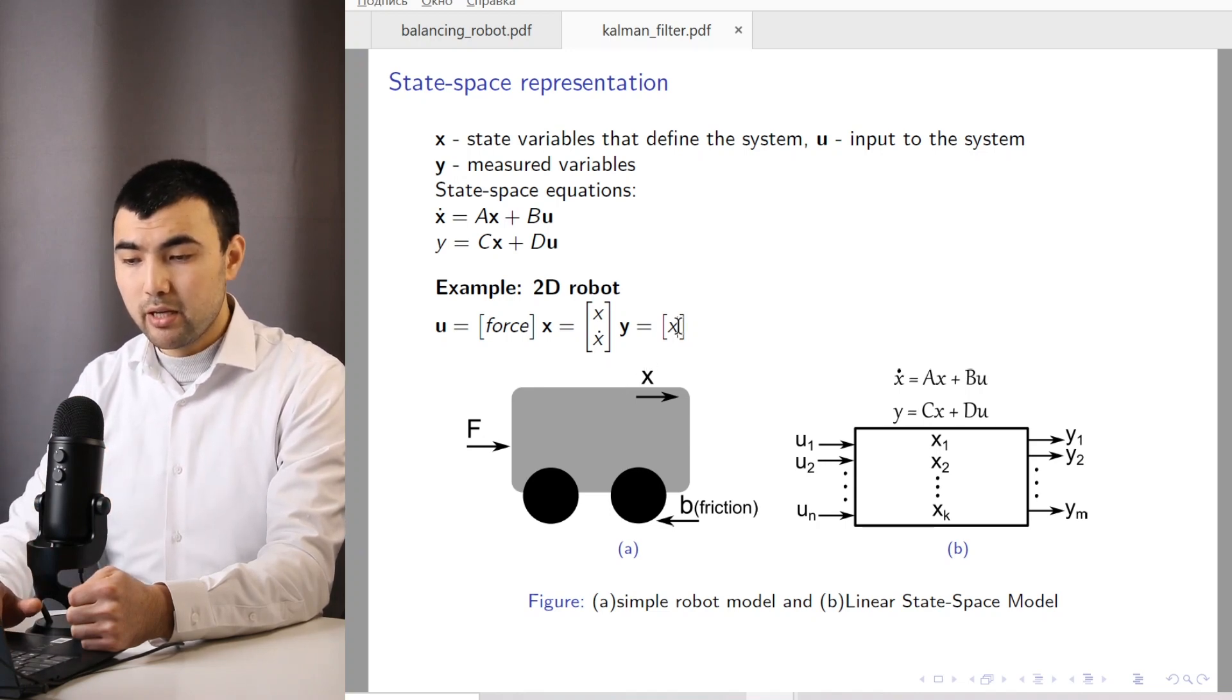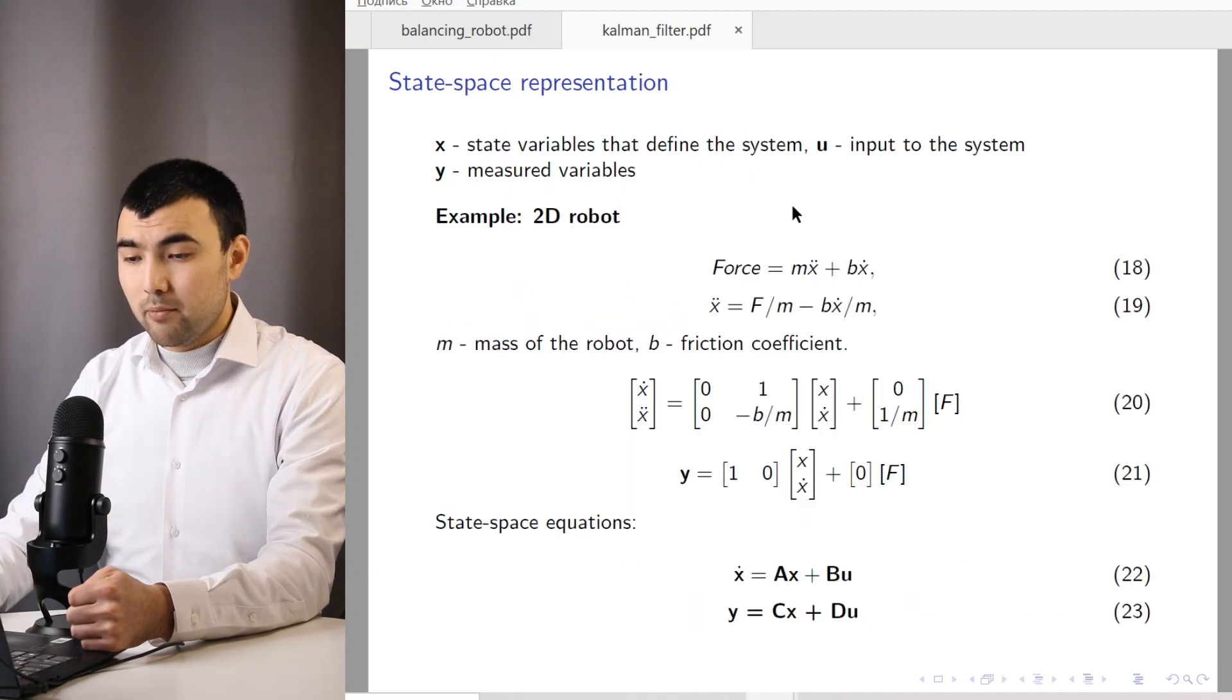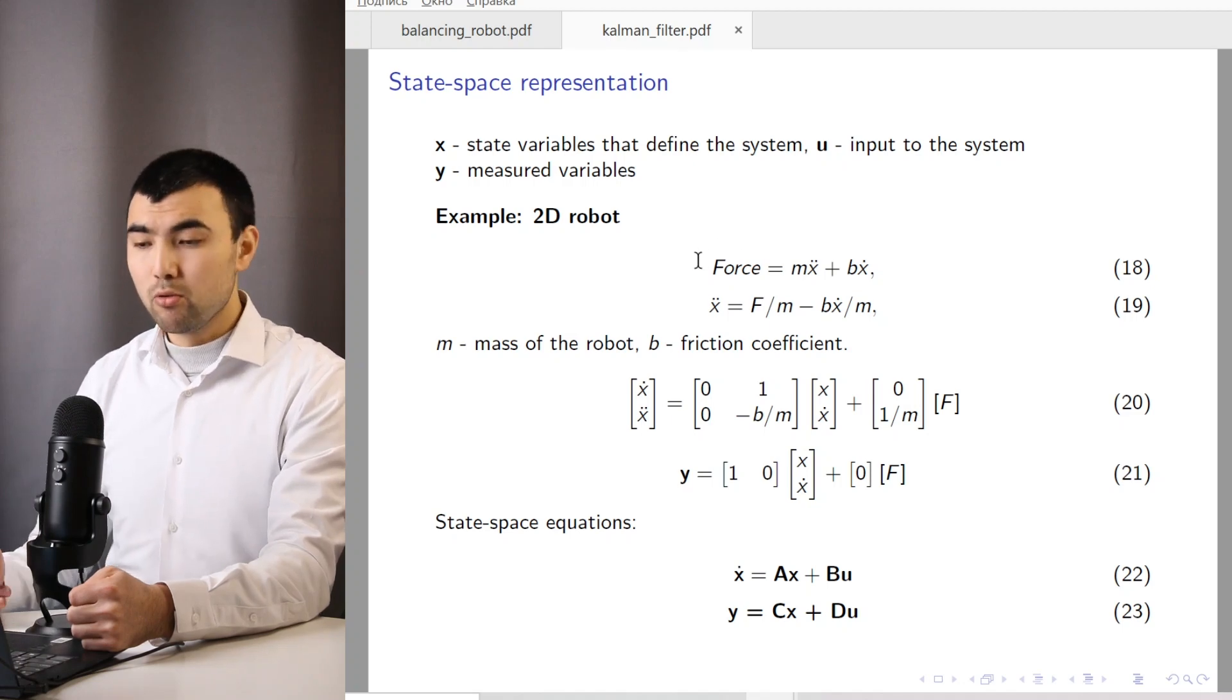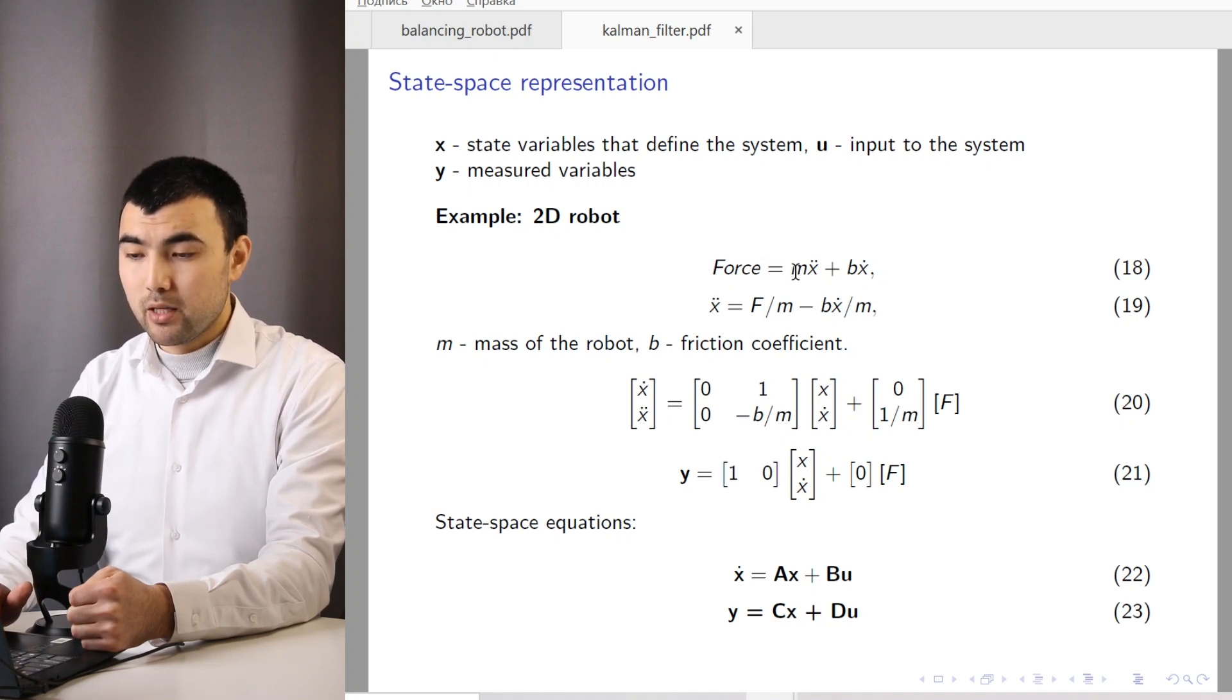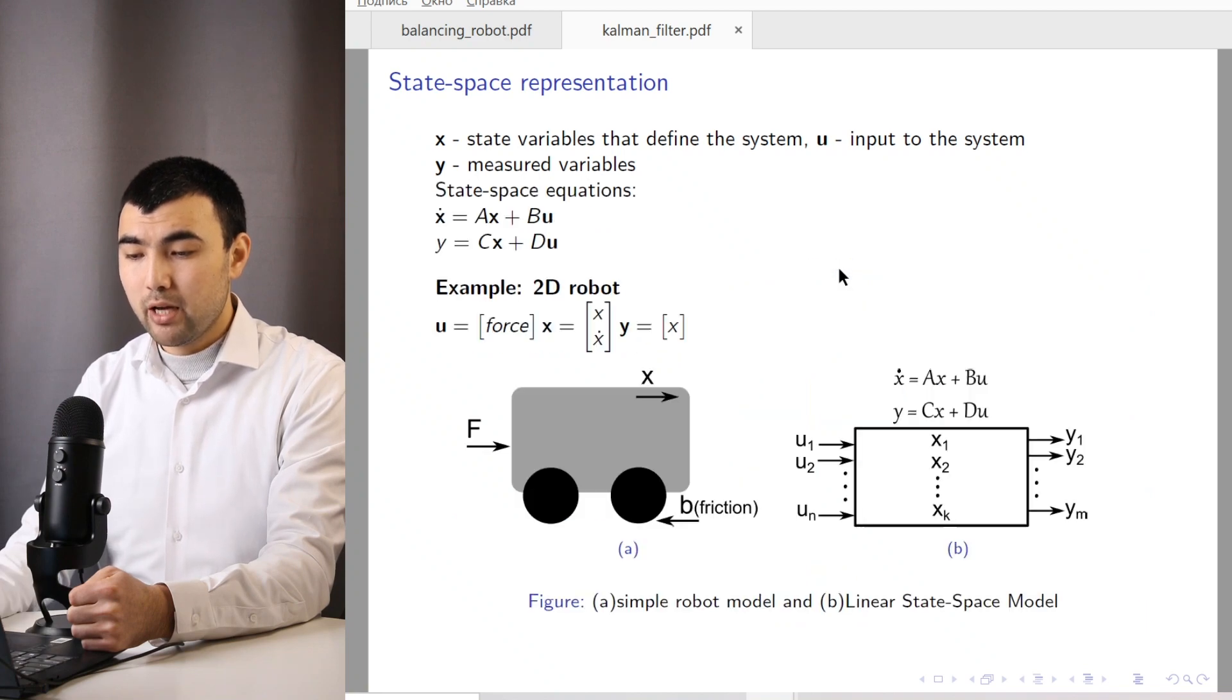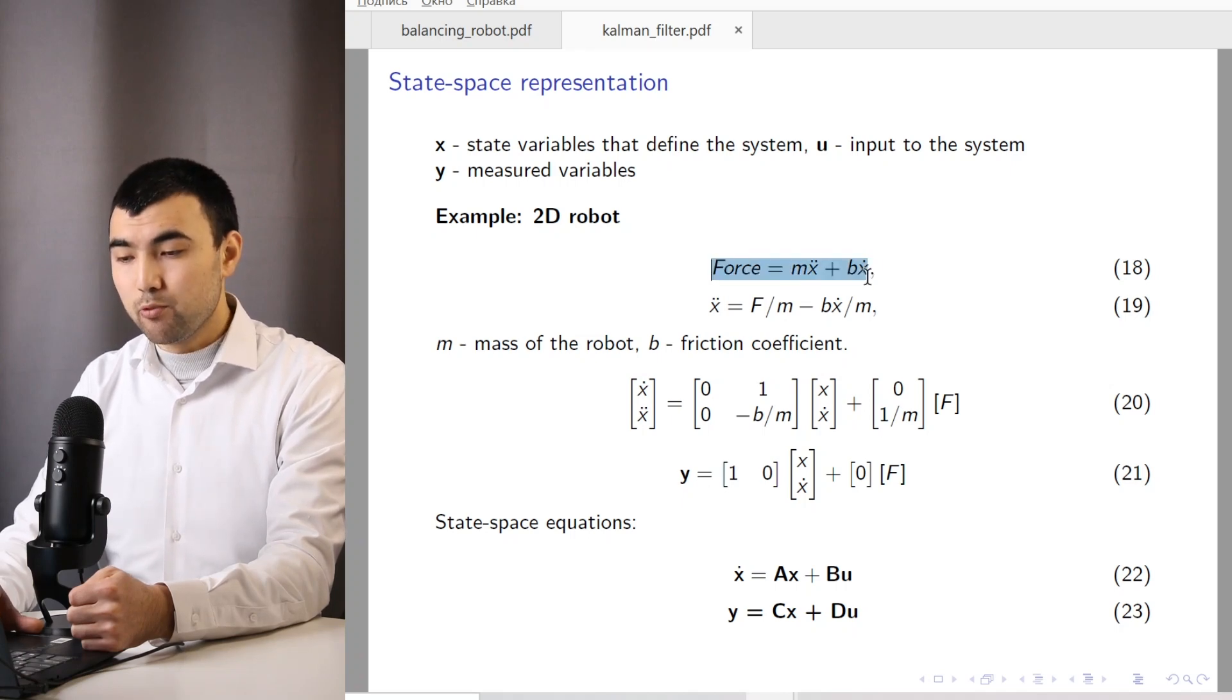And as measured variables, let's say we just measure the position. The next step is to use Newton's law to show the relation between the force and acceleration. So force equals acceleration multiplied by M, and plus we have this friction, BX dot. And from this equation, we extract the acceleration.